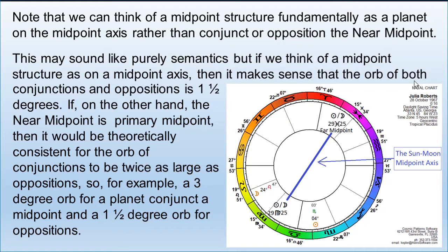Now this is an interesting point. Looking at the chart wheel in the lower right corner with the Moon at 24 Leo and the Sun at 4 Scorpio, the midpoint happens to be 29 degrees 25 minutes of Virgo, shown in the third house. In vibrational astrology, we use a one-and-a-half degree orb for a planet near 29 Virgo 25. If a planet is within one and a half degrees of that point, we say it's a midpoint structure and that planet is conjunct the midpoint of Sun and Moon. Similarly, if a planet is within one and a half degrees of 29 Pisces 25, we have a midpoint structure and that planet is opposition the near midpoint in Virgo.